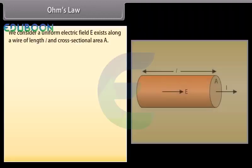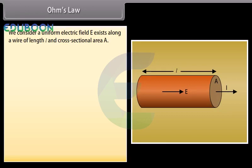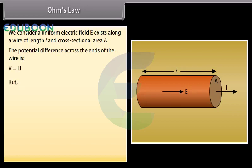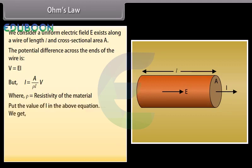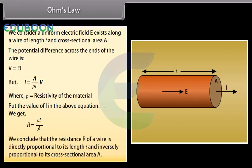Consider a uniform electric field E along a wire of length L and cross-sectional area A. The potential difference across the ends of the wire is V = EL. The current I = (A / ρL) × V, where ρ is the resistivity of the material. Substituting, we get resistance R = ρL/A. We conclude that resistance R is directly proportional to its length L and inversely proportional to its cross-sectional area A.